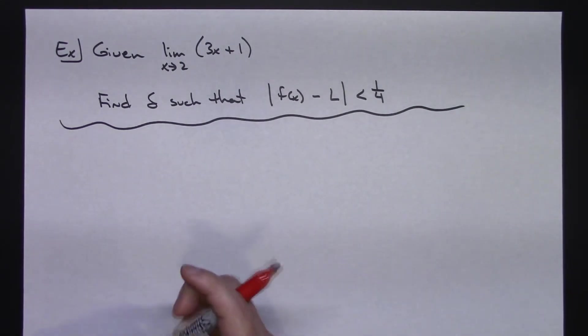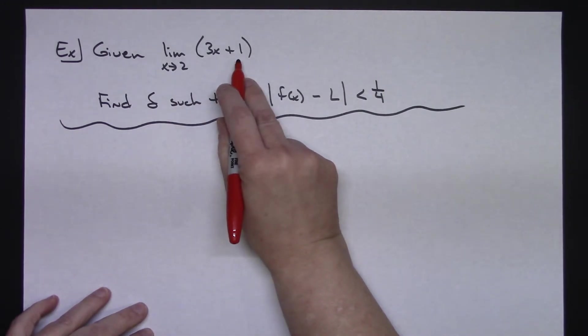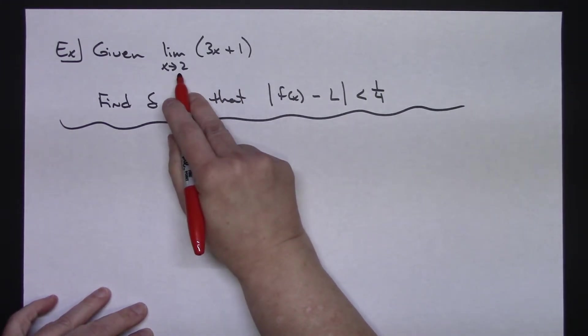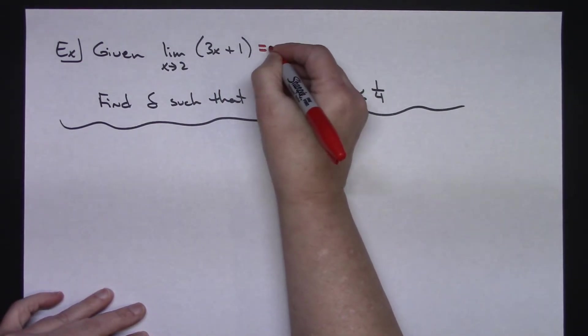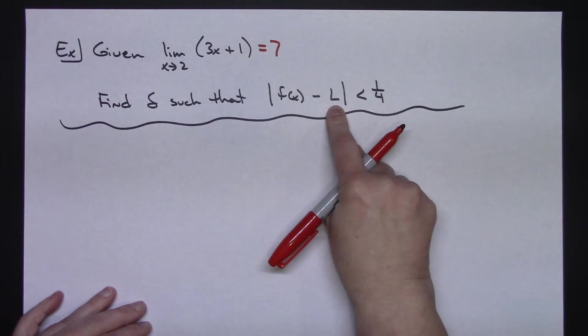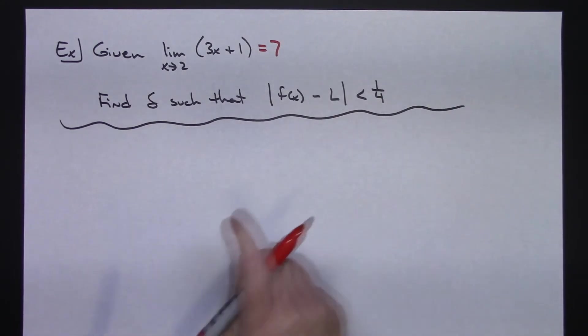So first off, let's go ahead and calculate the value of that limit. If I plug 2 in, 3 times 2 is 6 plus 1 more, that's going to give me a value of 7. So right there, my limit value is going to be 7.